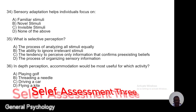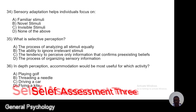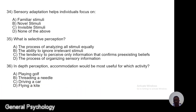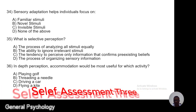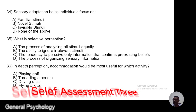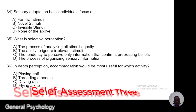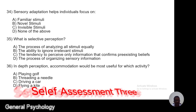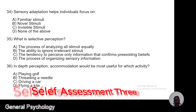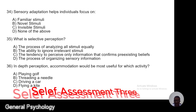Question 36. In depth perception, accommodation would be most useful for which of the following activities? A, playing golf; B, threading a needle; C, driving a car; D, flying a kite.